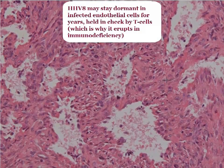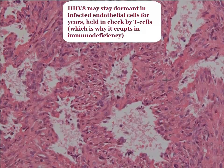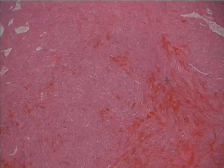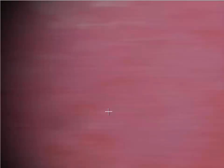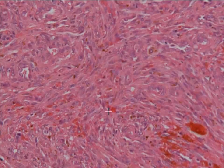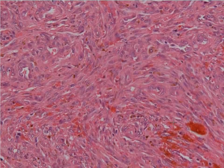That is a common finding in what we would see in the patch and plaque stage of this lesion. However, this is the nodular stage. And so often in that stage, what you see is that those vascular spaces have given way to this proliferation or nodule of mesenchymal cells.